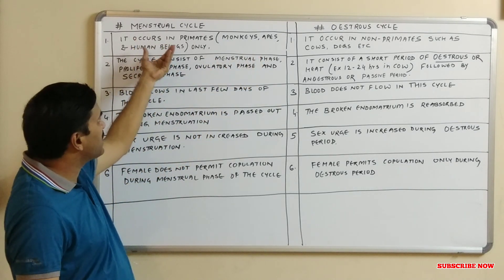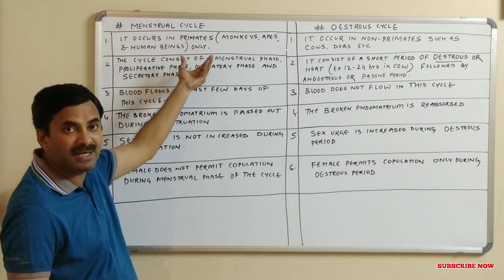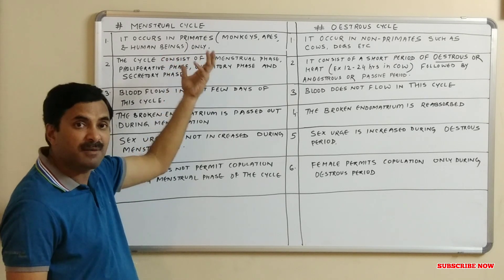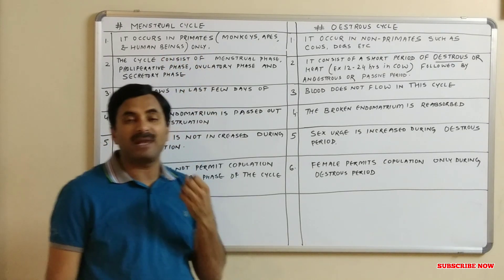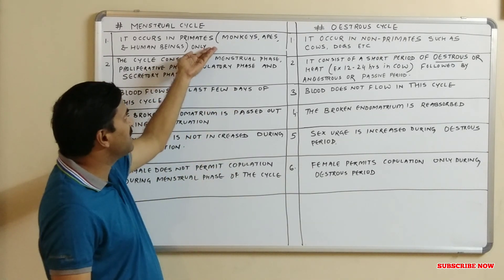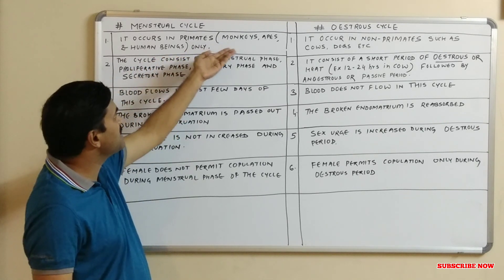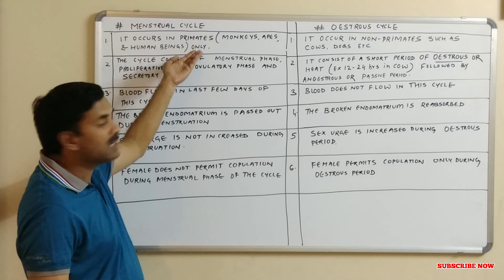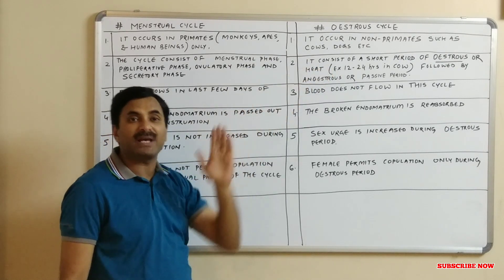The menstrual cycle occurs in mammals that are primates. As we know, primates are the last order of mammals — out of the sixteen orders of mammals, the last order is the primates, which includes monkeys, apes, and human beings. These primates are the ones that show the menstrual cycle.